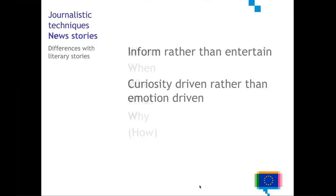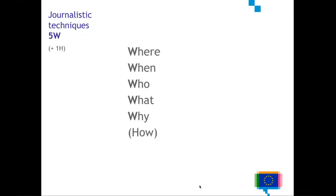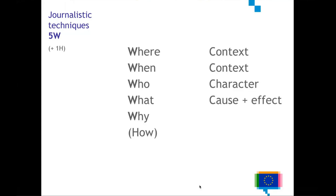One technique that journalists use is what is called the five Ws. This is taught in journalism schools throughout the world: a good news story should answer five W questions — the where, the when, the who, the what, and the why — and sometimes also the how. If you look at this, it's actually quite similar to the building blocks of stories we've already seen. The where and when is the context, the who is the character, and the what is the cause and effect. In this sense, news stories and other kinds of stories are related.